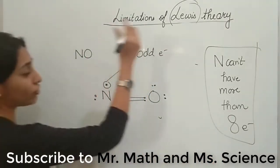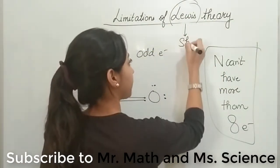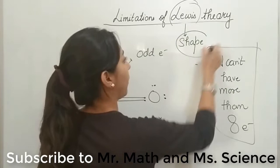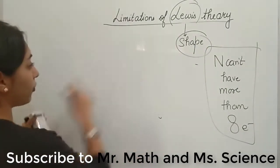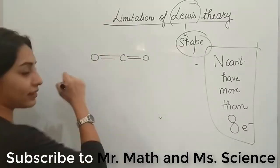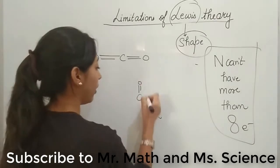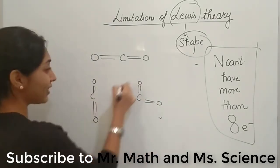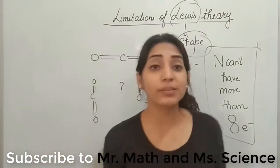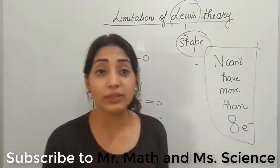One another thing about Lewis dot structure which was problematic. It couldn't explain anything about the shape of molecule. Like in the case of carbon dioxide, you remember, I have drawn the structure like this. Now whether the structure of carbon dioxide is this, or it is this, or it is this, Lewis dot theory couldn't explain anything. So these were all the limitations for the Lewis dot theory.